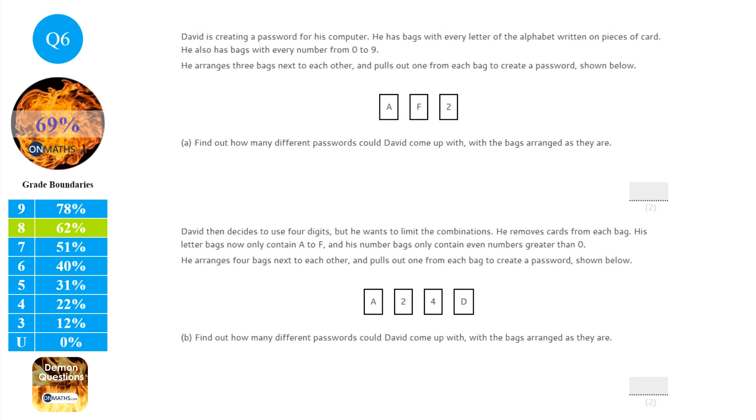This question seems really complicated because of the sheer amount of words. But actually it's quite a simple question when you get your head around it. So the first question we're looking at two bags of letters and one bag of numbers. And so there are 26 letters in the alphabet so there's 26 options for this first bag. There will be 26 options for the second bag.